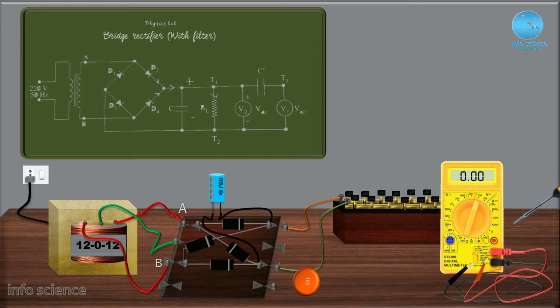We can switch on the primary circuit. The primary supply will be on. We remove the resistance box from 100 ohm resistor.